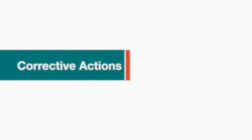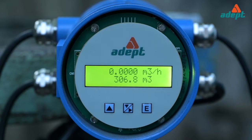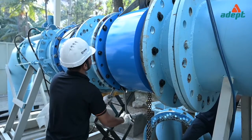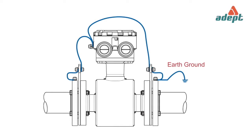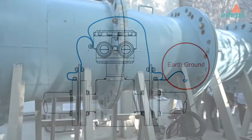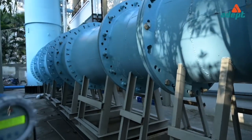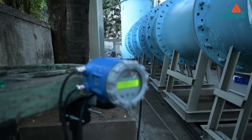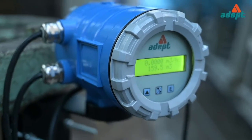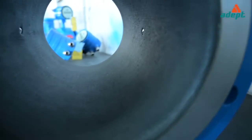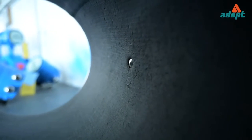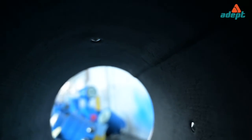Corrective actions: ensure absolute zero flow and check. Mount the flow tube correctly and check. Perform grounding as instructed and check. Ensure that the flow tube has been mounted to ensure full bore and then check. Isolate and remove the flow tube; remove any deposit on and around the electrodes.